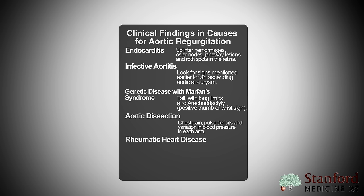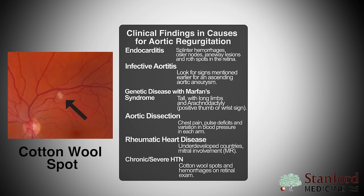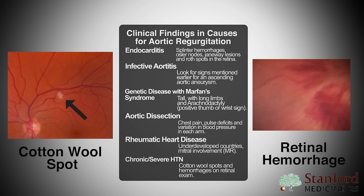Rheumatic heart disease, more common in underdeveloped countries, often presents with mitral involvement — usually mitral regurgitation. Chronic severe hypertension — look for cotton wool spots or hemorrhages on retinal exam. A full list of causes can be found on the Stanford 25 website.